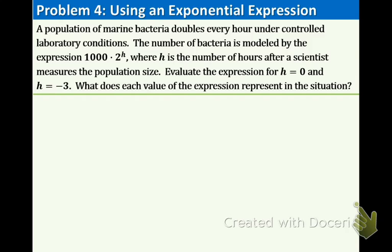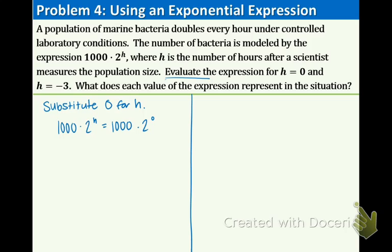Okay, the moment you've been waiting for, I know you're wondering how does this apply to life. And I'll let you know. Let's go through this problem together. A population of marine bacteria doubles every hour under controlled laboratory conditions. The number of bacteria is modeled by the expression 1,000 times 2 to the h, where h is the number of hours after a scientist measures the population size. Evaluate the expression for h equals 0 and h equals negative 3. What does each value of the expression represent in the situation? We have used the word evaluate in the past. Remember, that just means plug in that number. So first let's substitute 0 for h. So now we have 1,000 times 2 to the h. The h is going to become a 0. 1,000 times 2 to the 0. And hopefully by now you understand that anything to the zero power equals 1. So that means we have 1,000 times 1, which obviously equals 1,000. So there were 1,000 bacteria at the time that the scientists measured the population. So at 0 hours, there were 1,000 bacteria.